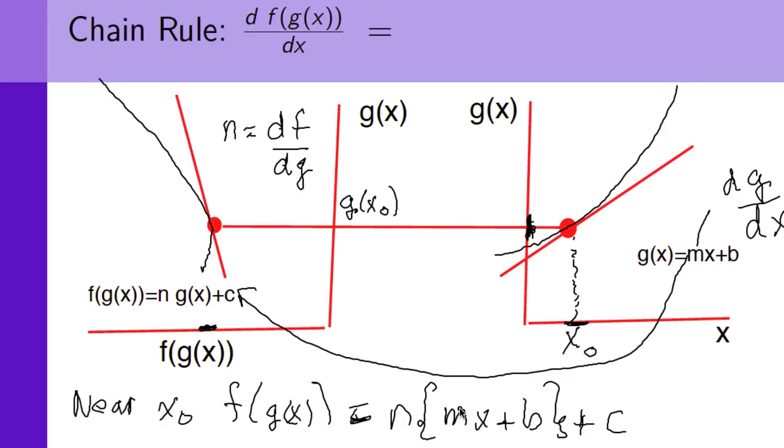So, that's equal to, let's write it up here, n, m. Which is equal to n, df dg, dg dx.